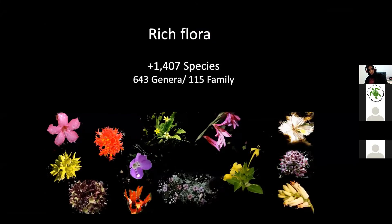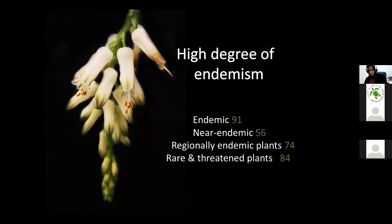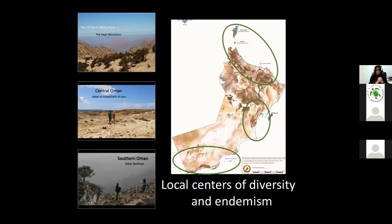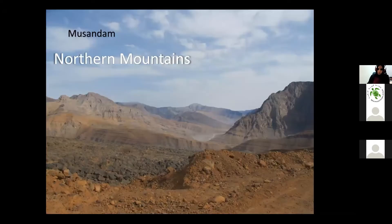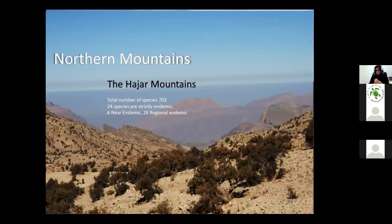Oman has a rich flora of about 1,400 species, with a high degree of endemism. We have around 91 endemic species, 56 near-endemic, and 74 regionally endemic species, with 84 rare or threatened species, plus many other species still under description and discovery. We can divide Oman into three main local centers of diversity and endemism — the first being the northern mountains, from Musandam and the Hajar mountains, which host about 700 species.